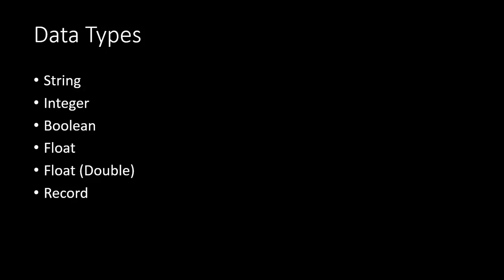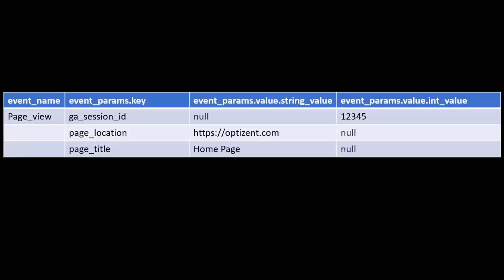Boolean is true or false. In BigQuery you'll also notice float and double — there are two types of floats. Double is the one not currently used by GA4, but it's still there. Float is just a decimal number. And then there is something called a record type, which is where all your events and user properties get stored.